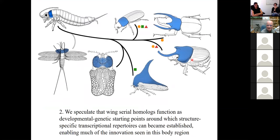So what have we learned? We have learned that the evolution of thoracic wings was initiated through the repurposing of wing serial homologs and we speculate that wing serial homologs function as developmental genetic starting points around which structure-specific transcriptional repertoires become established and they enable much of the innovation seen in this body region. That includes horns as in our beetles, but also we hypothesize the helmets of tree hoppers, the projections of lace bugs, and these winglets of fossil paleodictyopterans.